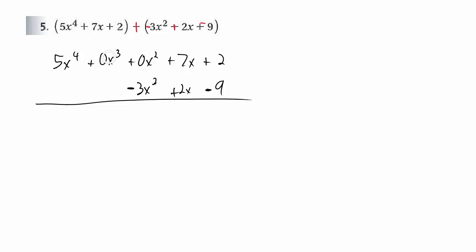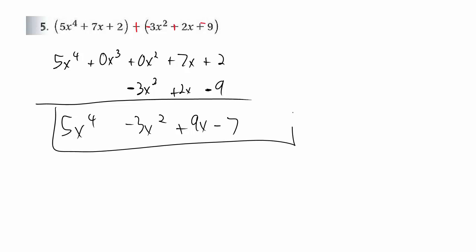You don't really need the placeholder since there's nothing to combine there. So it's 5x to the fourth minus 3x squared plus 9x minus 7. You have to put it in descending order. We don't have to write the x cubed term because 0 times x cubed is 0, so there's no need to make a place marker for it since it's not present in this answer.